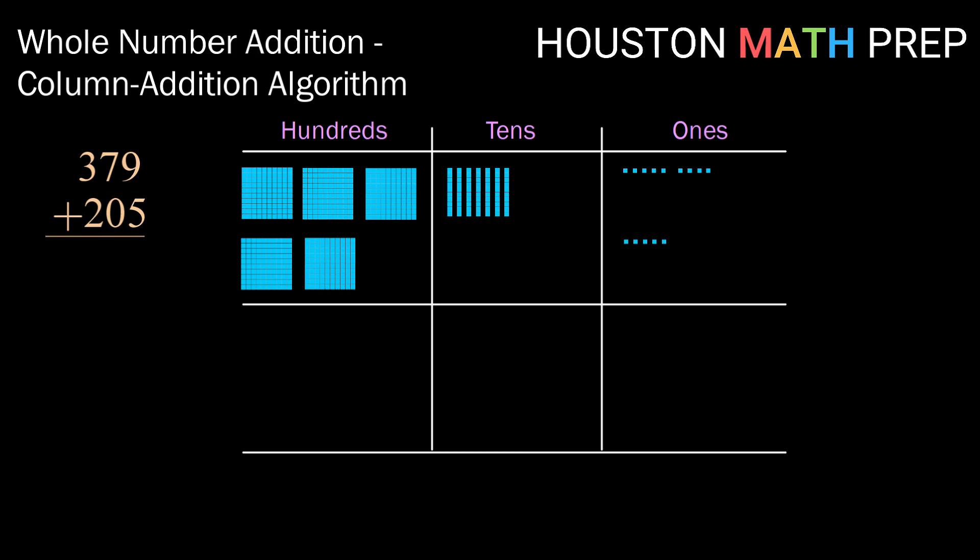So over in that ones column I see if I count those up that I have 14 ones pieces. So I'm gonna go ahead and gather up 10 of them and trade them in for a 10 block. So I've got my original 7 ten blocks from above plus the one I'm trading in. That leaves me with 4 ones so I'm just gonna carry those down.